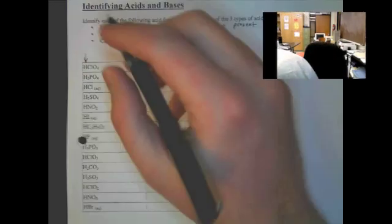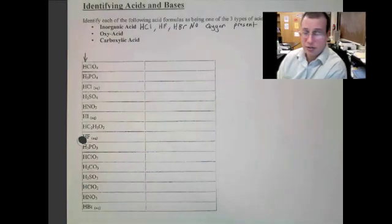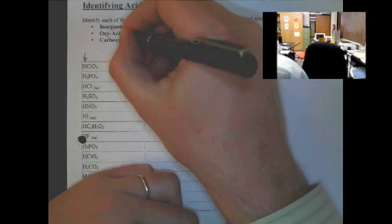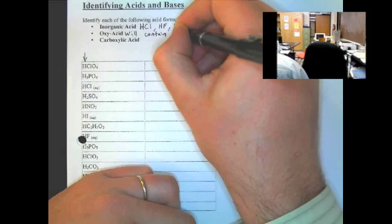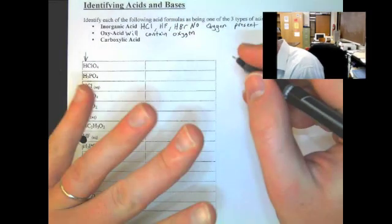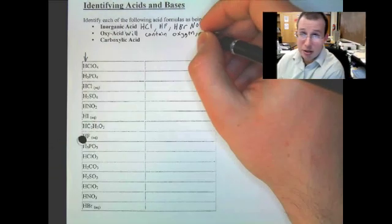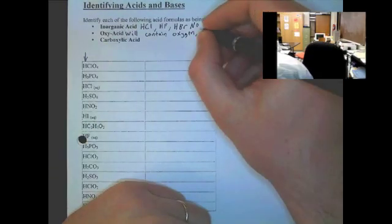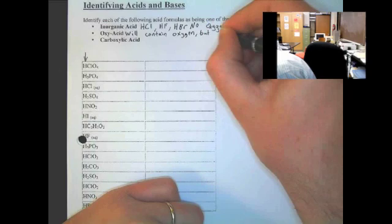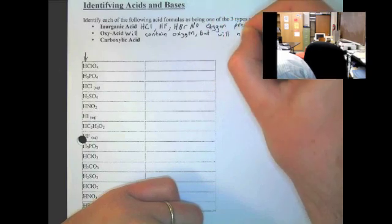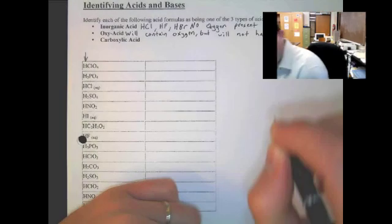Now, the next type, oxyacid. This one basically is the opposite of that. They will have oxygen. So the oxyacid will contain oxygen. However, to make this simple for you, let me tell you that if it contains oxygen and carbon, it will not be an oxyacid. So we'll say that this will contain oxygen, but will not have carbon.